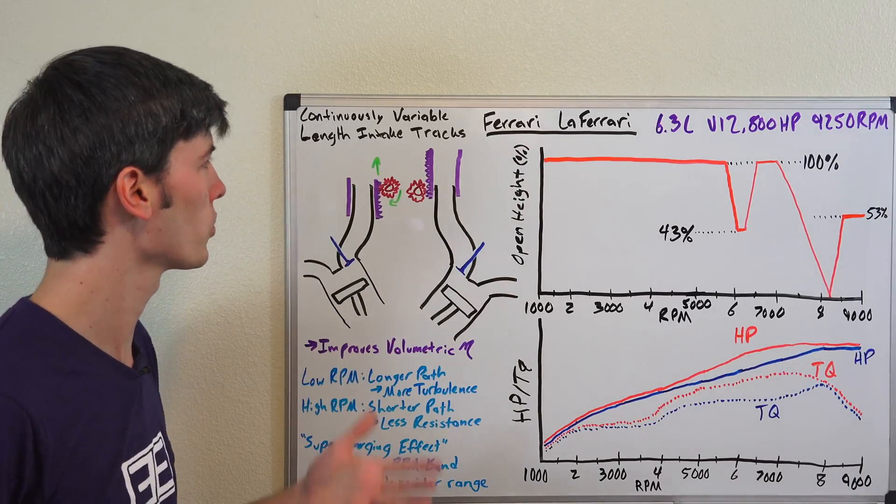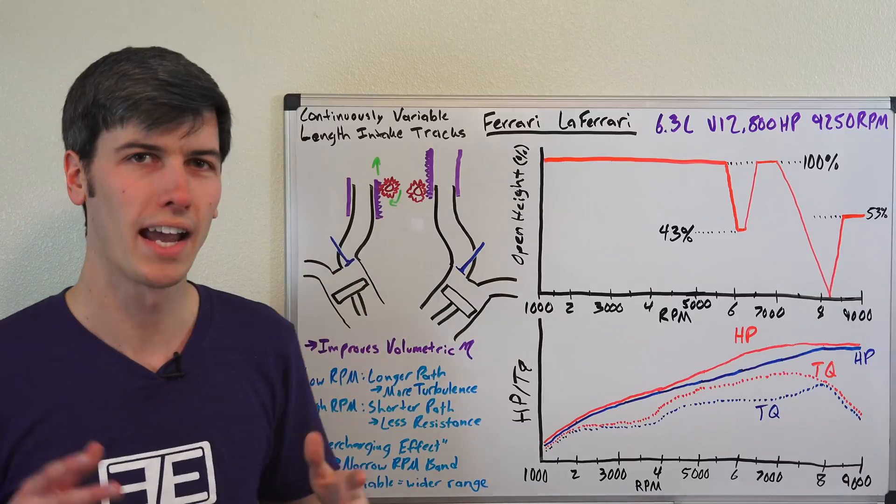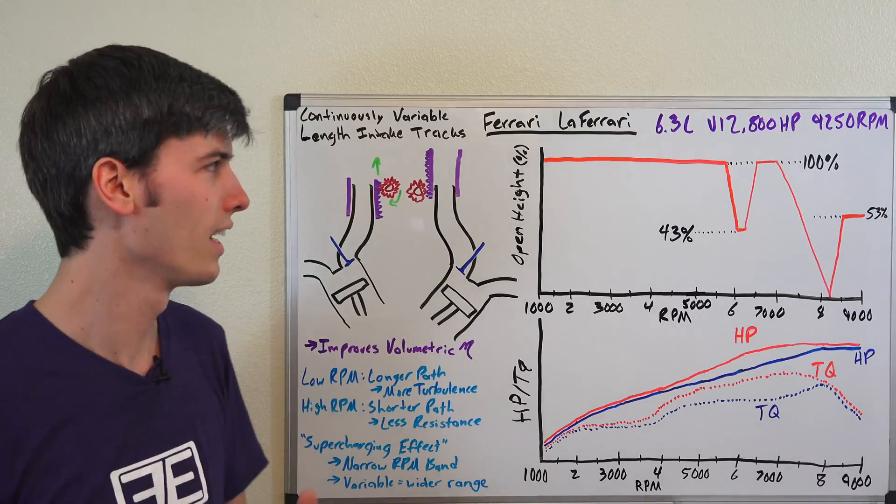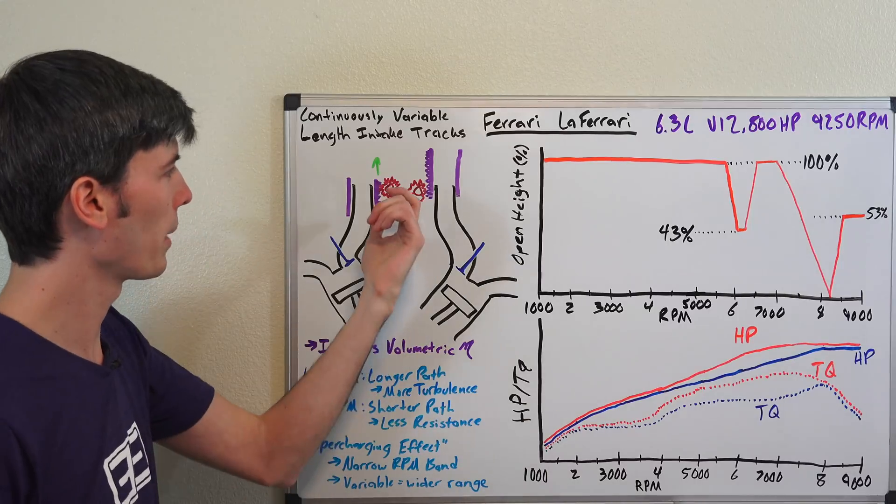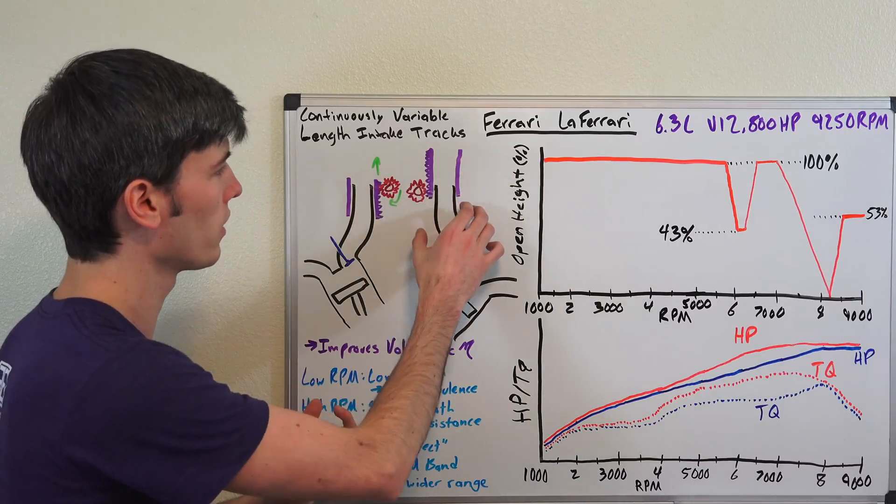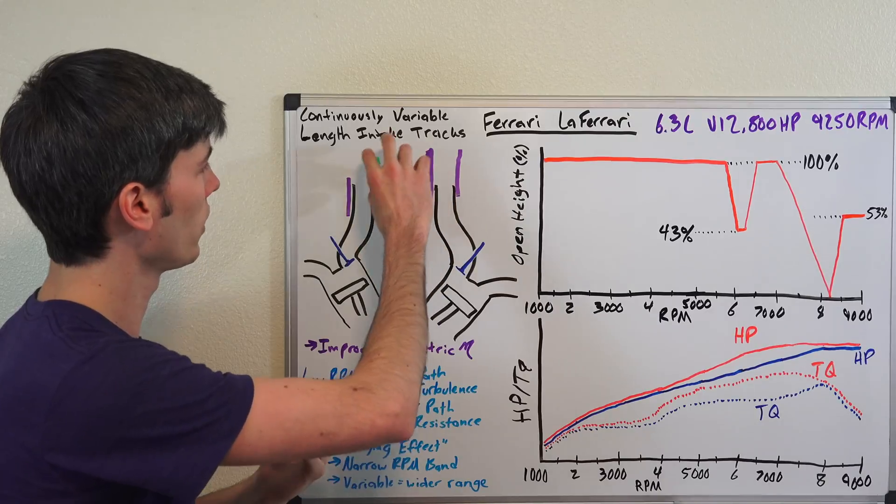It's called the Continuously Variable Length Intake Tracks and this is actually something they used in Formula 1 before it was banned. Basically you can change the length of the intake runner and this is continuously variable.